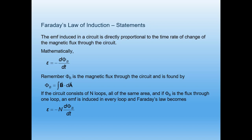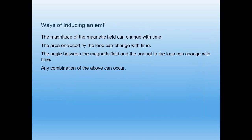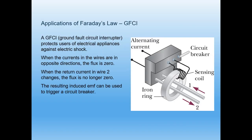The flux can be varied by changing any one or more of the terms B, A, or θ. The flux can also be altered by changing the shape of the coil in a magnetic field, or by rotating the coil in a magnetic field such that the angle θ between B and A changes, which also induces an EMF. Other ways include: the magnitude of the magnetic field changing with time, the area enclosed by the loop changing with time, or the angle between the field and the normal to the loop changing with time.